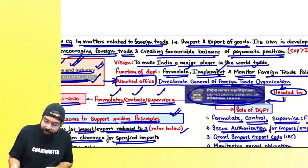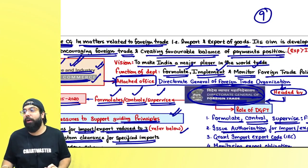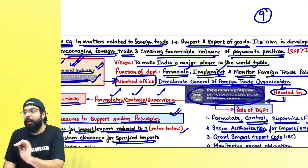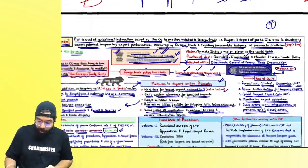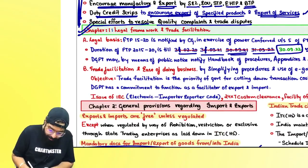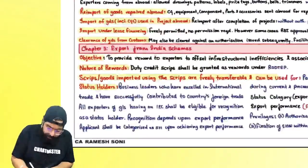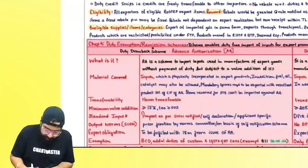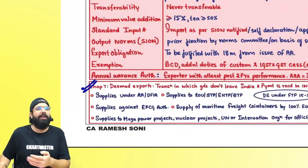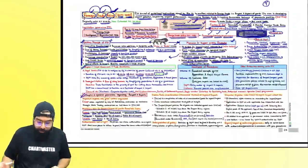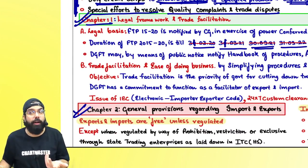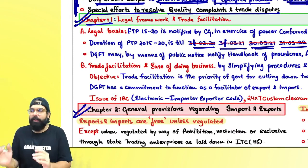There are nine chapters in the foreign trade policy, but seven of them are the most important. The teacher has summarized the chapters into small paragraphs. For five marks, all nine chapters apply, but the key ones are chapter 1 through 7. The first chart covers the main chapters. Let's begin with chapter 1: Legal Framework and Trade Facilitation.